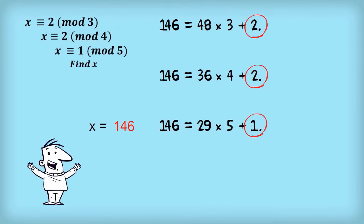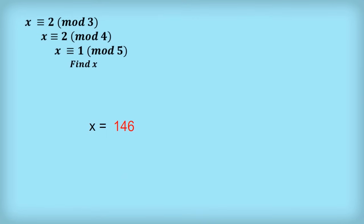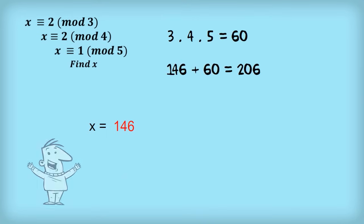You might ask, is 146 the only answer? Well, no. Since we're dealing with mod 3, 4, and 5, if we add 3 times 4 times 5, which is 60, to 146, we get 206, and that also works. In fact, we can add any positive or negative multiple of 60 to 146, and it still works.